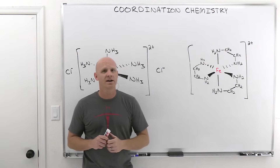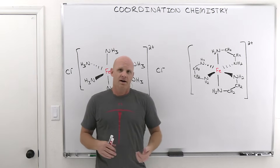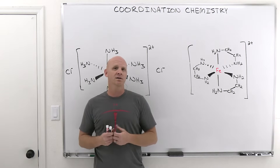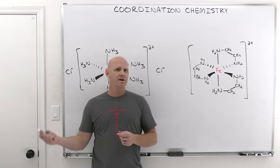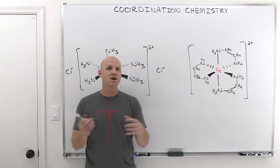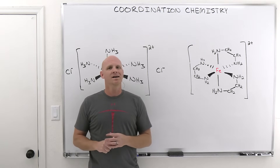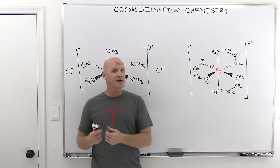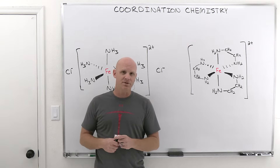Coordination chemistry is all centered around what we call a coordinate covalent bond. We learned that a covalent bond is just the sharing of electrons, typically between two non-metals, where one non-metal kicked in an unpaired electron and the other non-metal kicked in an unpaired electron, and they shared those two electrons as a single covalent bond. We're going to have a little bit different players here — we're still going to have some sharing of electrons, but where those electrons come from is going to be a little bit different.